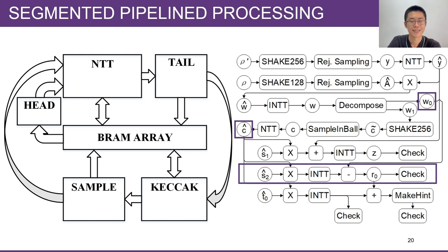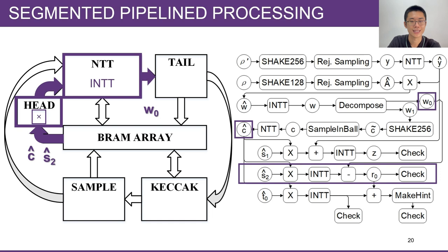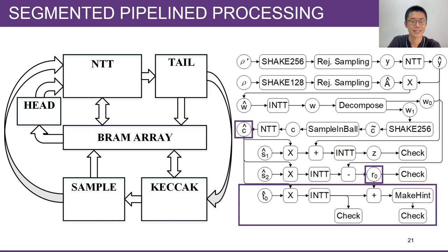For the second multiplication, w0 minus c times s2, the c and s2 are stored in NTT domain, and w0 is stored in normal domain. So the HEAD module multiplies c-hat and s2-hat, and the product is sent to the NTT module. The subtraction is done in the TAIL module in normal domain, and its result r0 is checked immediately and stored into BRAM. The process of the third multiplication, r0 plus c times t0, is similar.